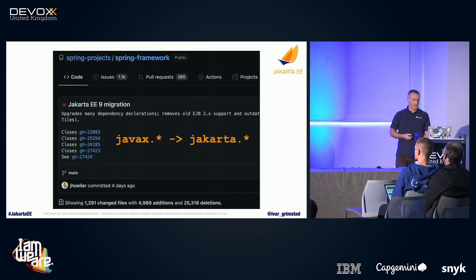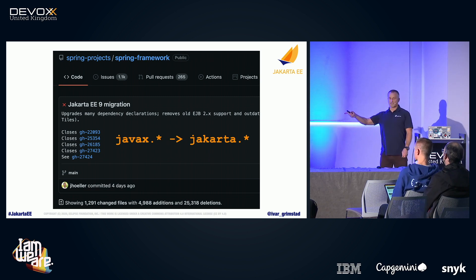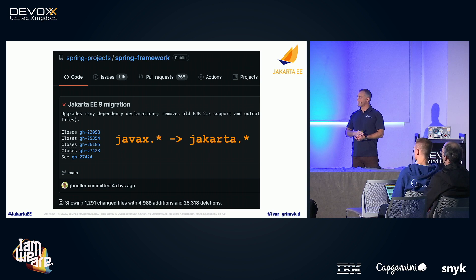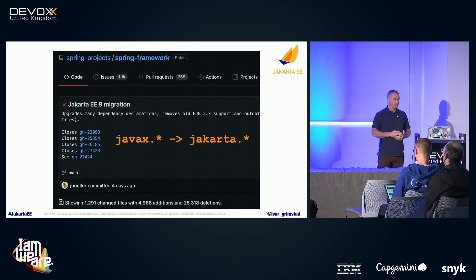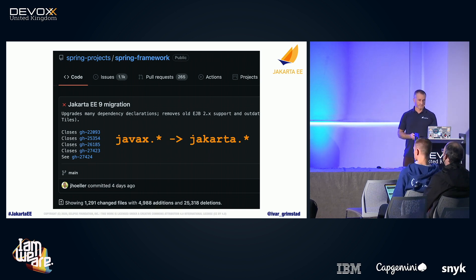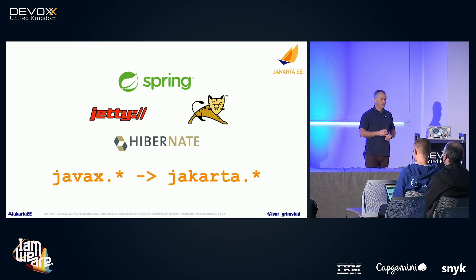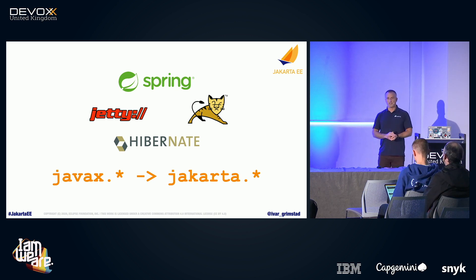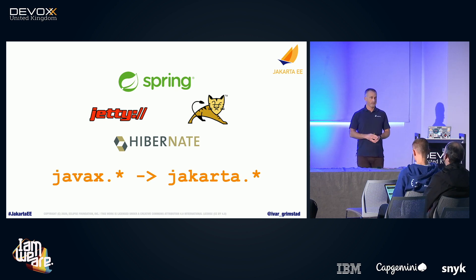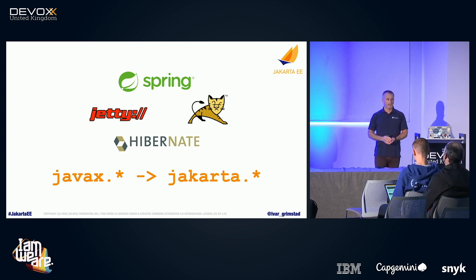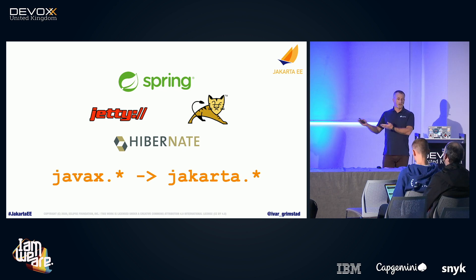The work is progressing. If you're using Jetty, Tomcat, or Hibernate, they've already moved to the Jakarta namespace. So if you want to stay on the latest version of Jetty, for example, you have to change the namespace in your applications. The same applies to Tomcat 10 and newer, and Hibernate has also announced a version on the Jakarta namespace. It's a hurdle we have to get over, and then we can get moving.